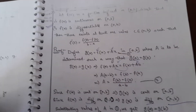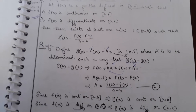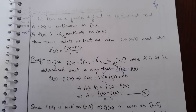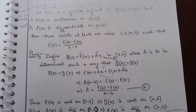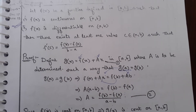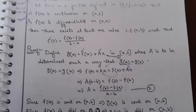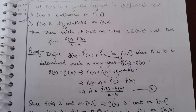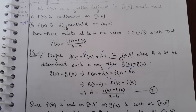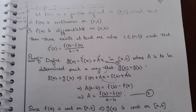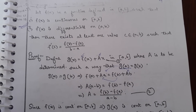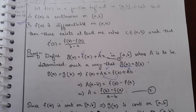Lagrange's Mean Value Theorem. Let f(x) be the function defined on closed interval [a, b] such that: first, f(x) is continuous on closed interval [a, b]; second, f(x) is differentiable on open interval (a, b). Then there exists at least one value c belonging to (a, b) such that f'(c) = [f(b) - f(a)] / (b - a).